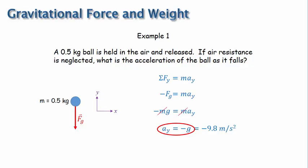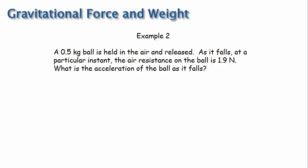And now I'll change the problem to make a point. This time, we'll include air resistance. In this problem, again a 0.5 kg ball is held in the air and released. As it falls, at a particular instant, the air resistance on the ball is 1.5 newtons. What is the acceleration of the ball as it falls? So here's the force diagram this time, where now we have air resistance.